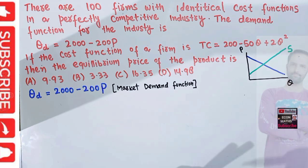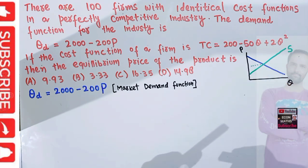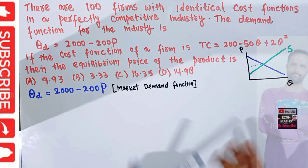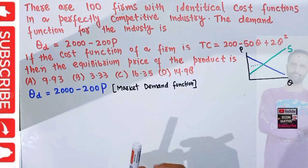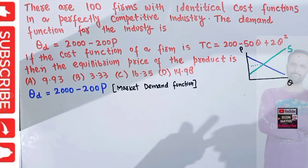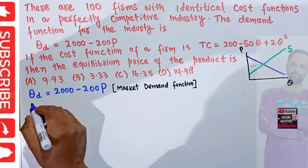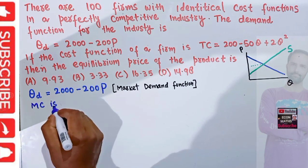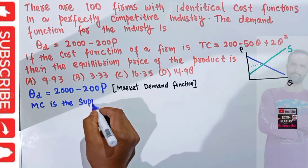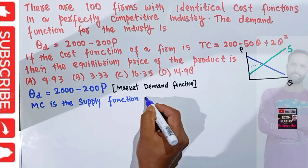To find the equilibrium price we need the market supply function. Since the supply function is not given here, we need to construct it — we need to derive the individual firm's supply function first. In a perfectly competitive market, the supply function of a firm is actually the marginal cost curve — that is, marginal cost is the supply function of the firm.